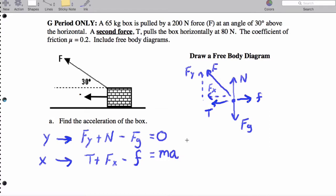So, we need to do a couple things. First, let's get values for F_Y and F_X. F_Y equals 200 times the sine of 30. And that's going to give me 100 newtons.